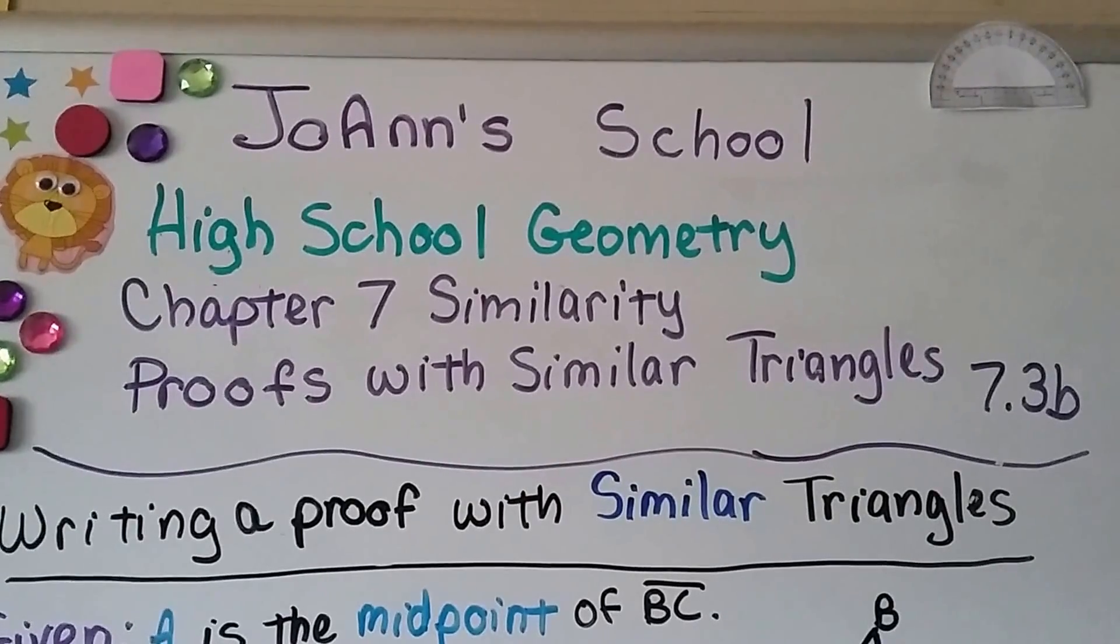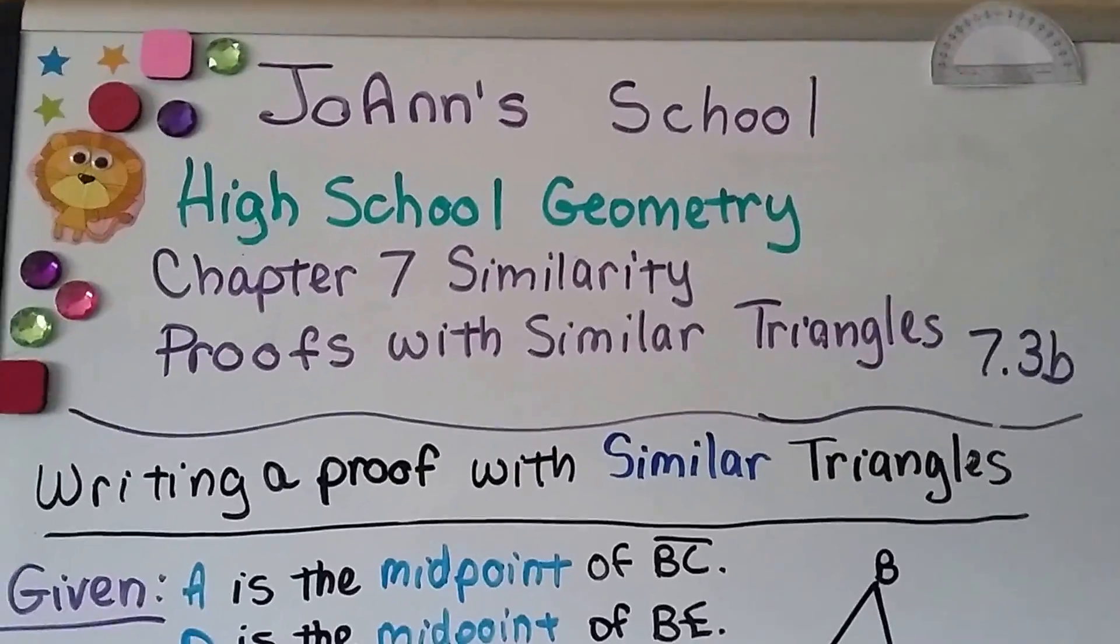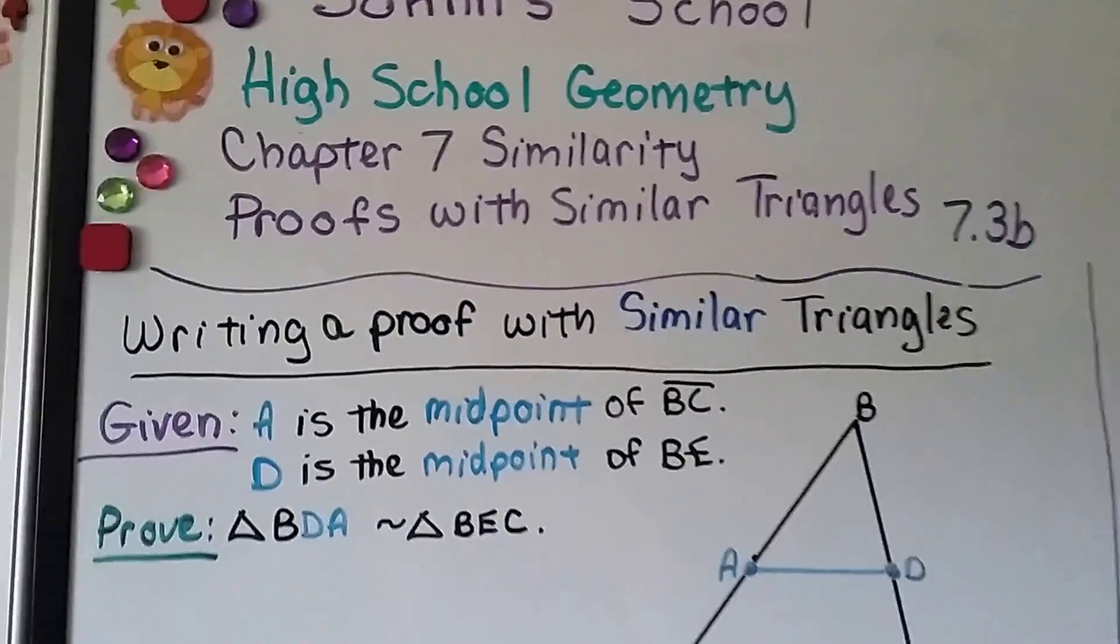We're at section 7.3b, and this is proofs with similar triangles. We're going to write a two-column proof with similar triangles.